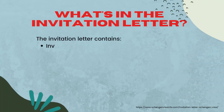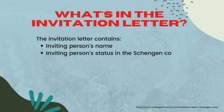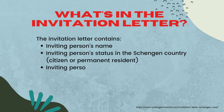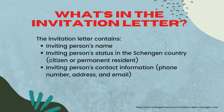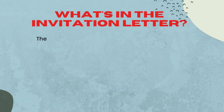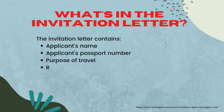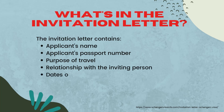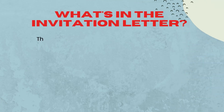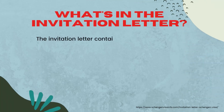What's included in the invitation letter? It contains the inviting person's name, his or her status in the Schengen country — whether he is a citizen, permanent resident, or a permit holder — his or her contact information, which would include the phone number, address, and email. The invitation letter also includes your name, passport number, your purpose of travel, your relationship with the inviting person, as well as your inclusive travel dates and your travel itinerary. The invitation letter also includes the inviting person's signature and some necessary document attachments or enclosures.